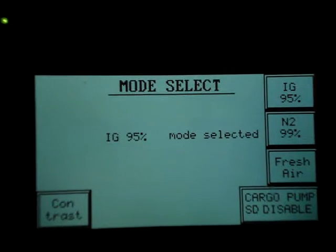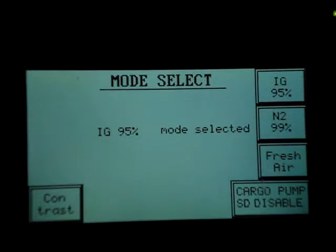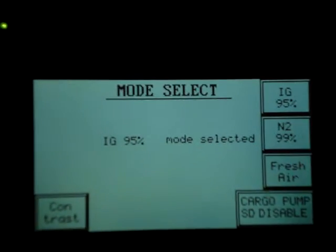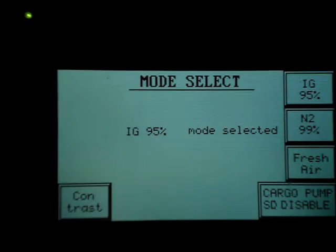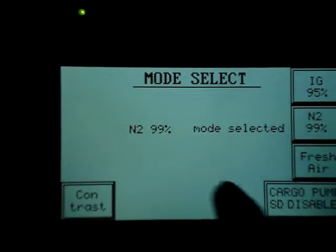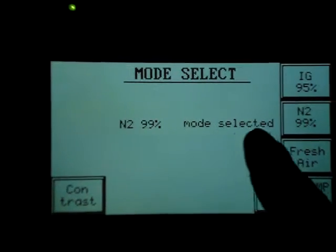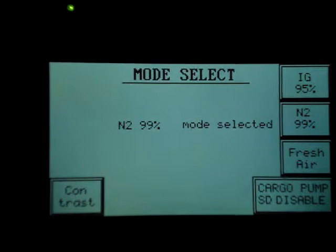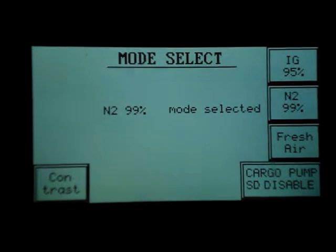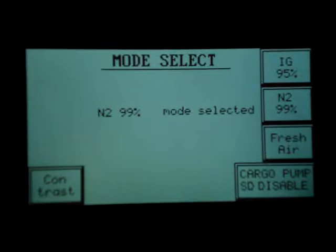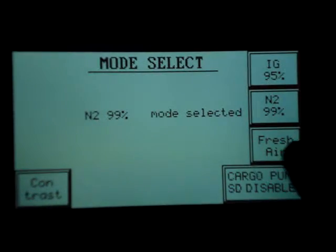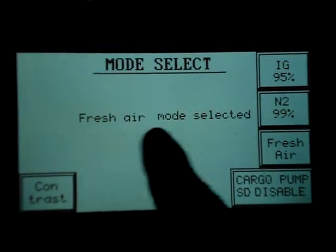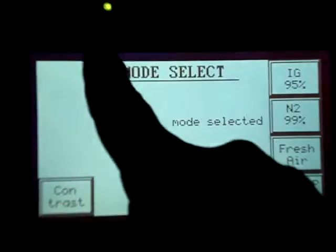Suppose the chief officer doesn't want IG, he wants N2. So if you want N2, then you have to go on N2 99 and press this. Once you press this, you get N2 99 mode selected and you can see the light over here. Suppose he wants fresh air mode, then you have to press fresh air mode. So you see this, fresh air mode is selected and you can see fresh air.